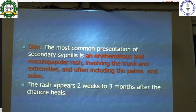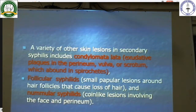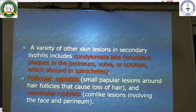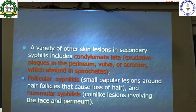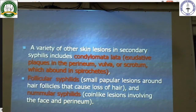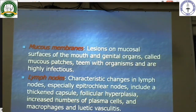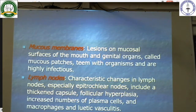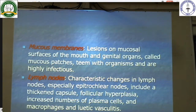Variety of other skin lesions in secondary syphilis include condyloma lata — exudative plaques in the perineum, vulva, or scrotum which abound in spirochetes; follicular syphilis — small papular lesions around hair follicles causing loss of hair; and nummular syphilis — coin-like lesions involving the face and perineum. In the mucous membranes, lesions on mucosal surfaces of the mouth and genital organs called mucous patches teem with organisms and are highly infectious. In lymph nodes, characteristic changes especially in epitrochlear lymph nodes include a thickened capsule, follicular hyperplasia, increased number of plasma cells and macrophages, and luetic vasculitis.